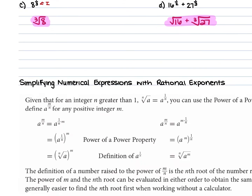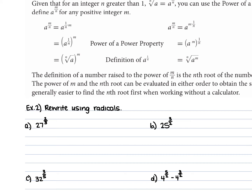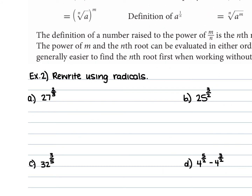For the next part, we're going to be simplifying numerical expressions with rational exponents — rewriting using radicals, but now our numerator in the fraction is a number other than 1. The numerator stays as the power on our base, and the index comes from the denominator of that fraction. For example a: 27 to the power of two-thirds. The 2 stays as your power and the 3 becomes your index, so this says find the cube root of 27 squared. You can write it either as the cube root of 27 squared, or as the cube root of 27 raised to the second power — they mean the same thing.